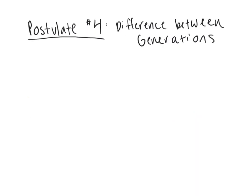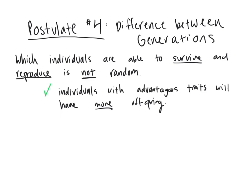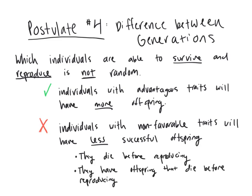Postulate four piggybacks off of postulate three. When offspring from two parents are genetically diverse, it is not random which of those offspring are successful. Successful individuals will have more offspring and thus change the population over generations. On the other hand, individuals without advantageous traits will either die before they can reproduce — not passing on those genes — or if they do reproduce, their offspring won't be as viable and face a higher risk of dying before reproducing. This is how the species is strengthened over time, as favorable traits will inevitably outweigh non-favorable traits in the population.